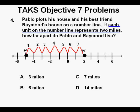Each unit on the number line represents 2 miles. And so the distance would be 7 times 2, or 14 miles, and that means that D is our correct answer.